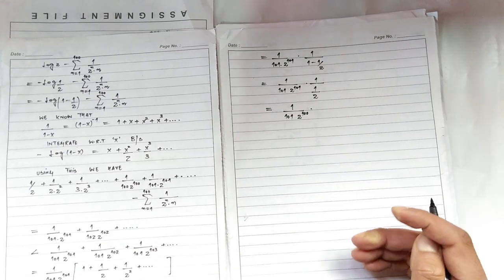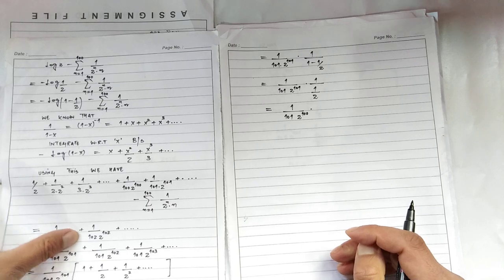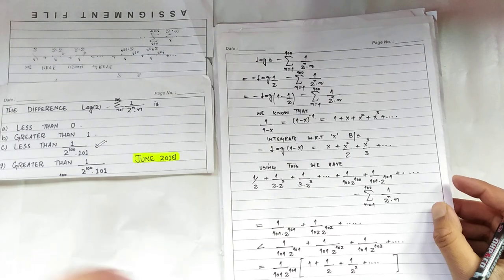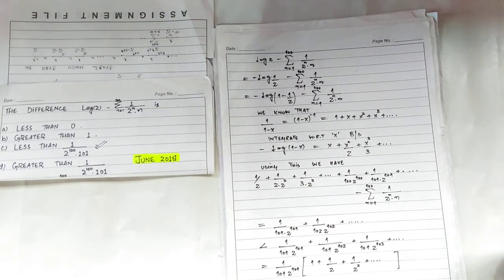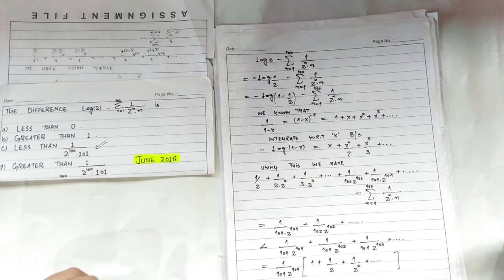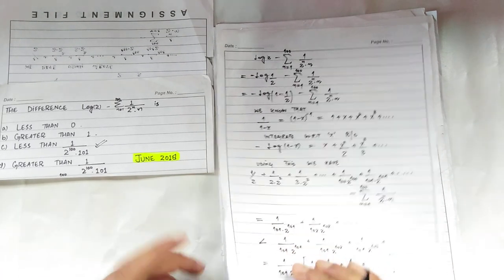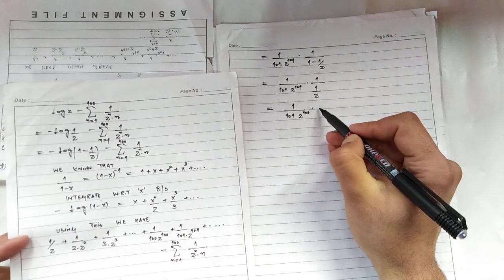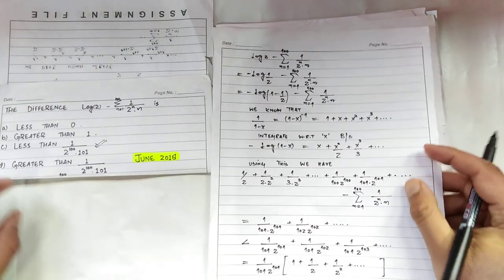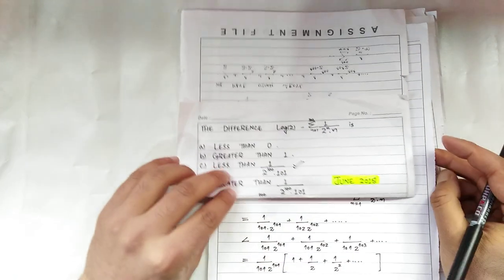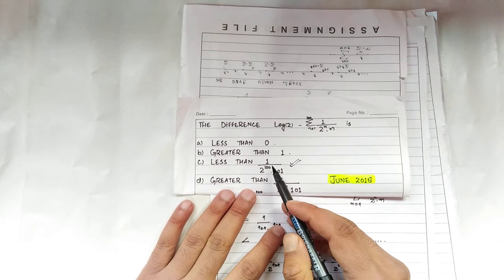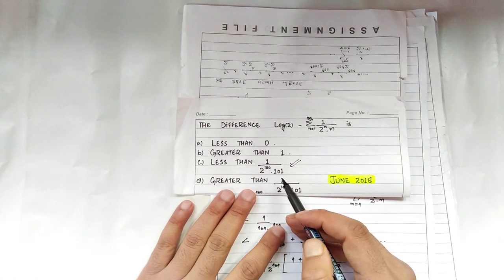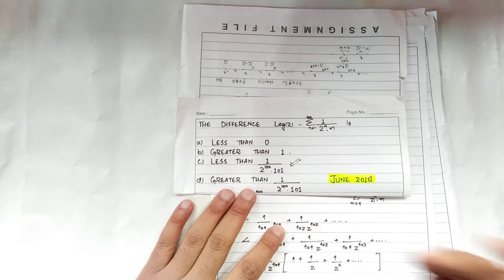So just going through this, it wasn't such a difficult level question, but we went on with it easily. After arriving here, we've successfully shown that this difference is less than 1 upon 2 power 101 times 101. Thanks for watching.